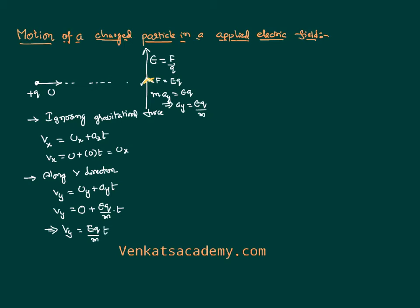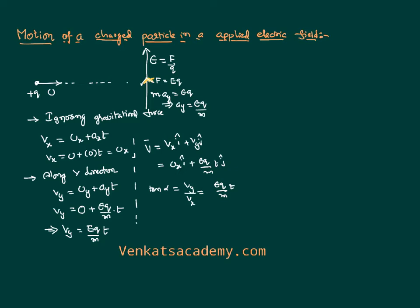If you are interested in calculating the total velocity, we can write v = v x î + v y ĵ, where v x is u and v y is (eq/m) × t multiplied by ĵ. The angle made by the velocity vector can be calculated by writing tan θ = v y / v x, which is (eq/m) × t.